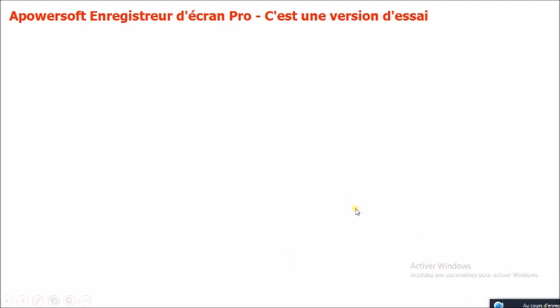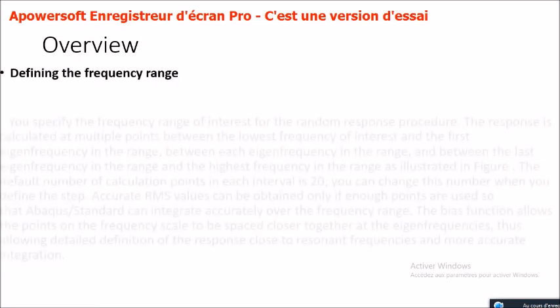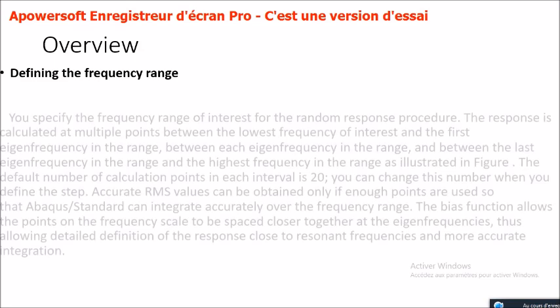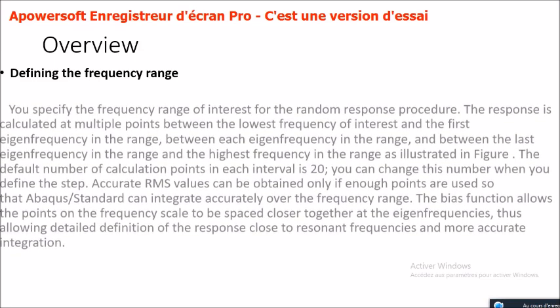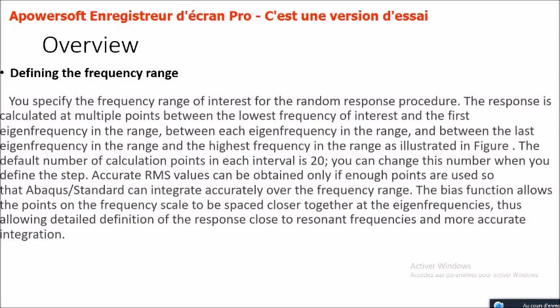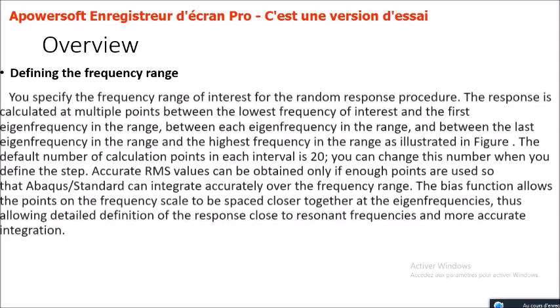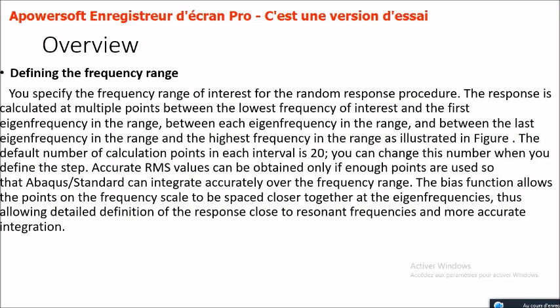Defining the frequency range: you specify the frequency range of interest for the random response procedure. The response is calculated at multiple points between the lowest frequency of interest and the first eigenfrequency in the range, between each eigenfrequency in the range, and between the last eigenfrequency and the highest frequency in the range, as illustrated in the figure. The default number of calculation points in each interval is 20, and you can change this number when you define the step.